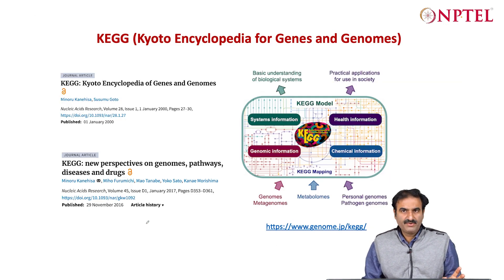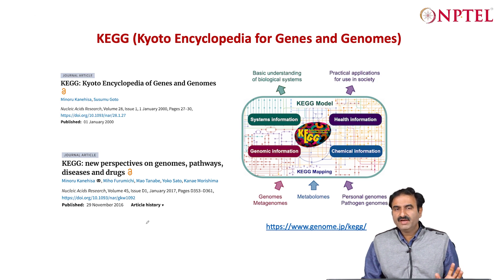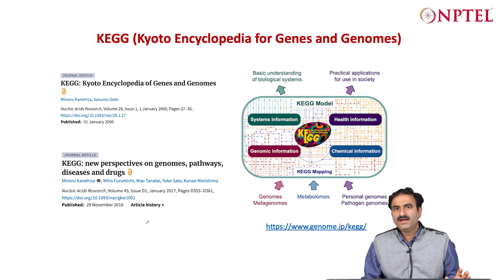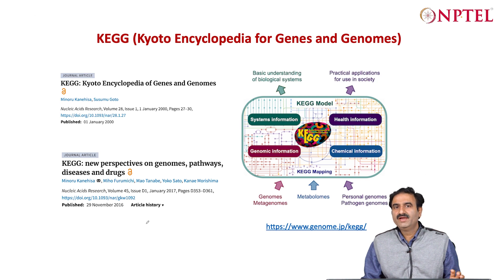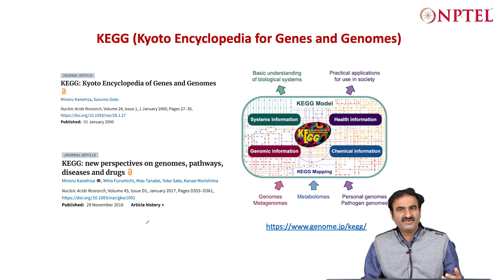KEGG — Kyoto Encyclopedia of Genes and Genomes — is a Japanese database. It is the most comprehensive database for metabolic pathways and also for the role of various genes in diseases, which it also contains information about.